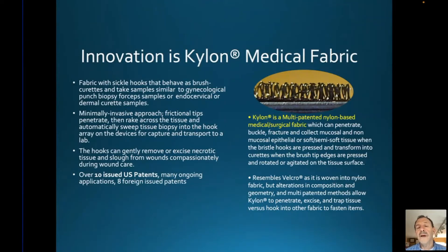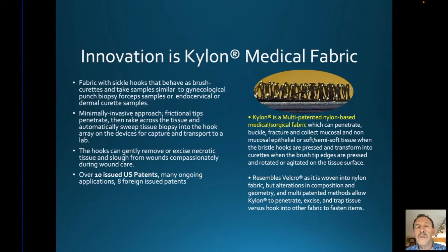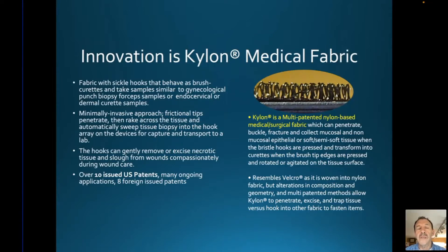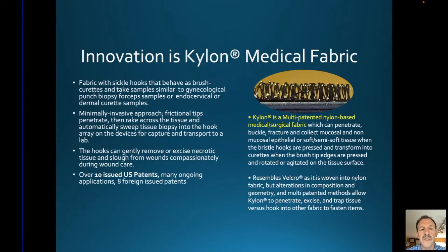The innovation is Kylon. You can see these hooks — they are different than Velcro. They are woven into a nylon fabric and they're upright naturally, but when you press them into the tissue firmly, like you would press a toothbrush with moderate pressure, you flatten those hooks. Instead of having a candy cane shape, they have more of a sickle shape. When flattened, it actually creates points that can poke into the tissue and work like little micro curettes. The frictional tips penetrate, then they rake. There are a lot of patents behind this technology.